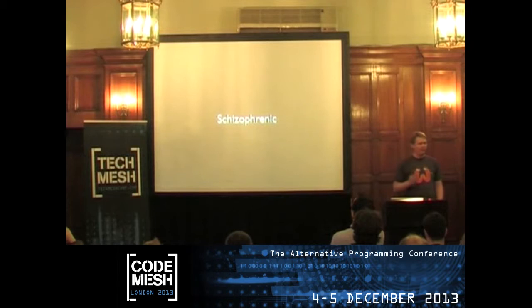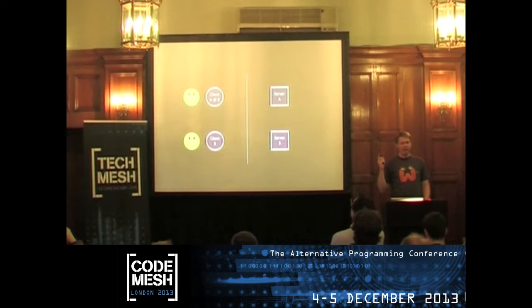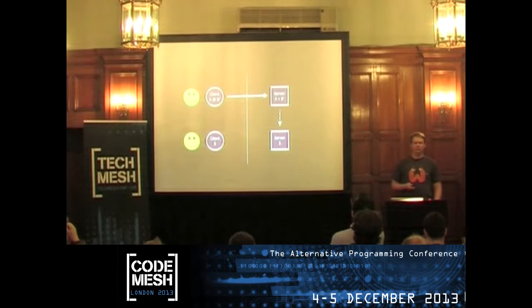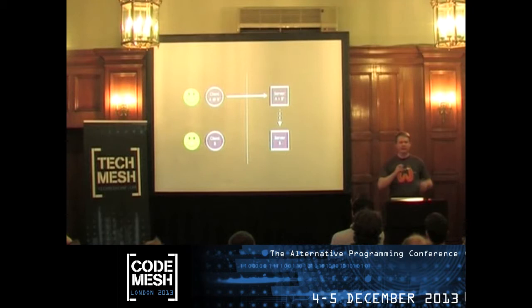We came up with a second solution, which we call schizophrenic. Same setup — A visits B — with one change: the server process of A holds a copy of the state of B. When the client makes a change, say it picks up an apple, it notifies the server, 'I just changed state and picked up an apple.' The server immediately updates that state and then notifies B's server, 'I tried to pick up an apple.' In this model, the client is the leading authority for state, not the server.